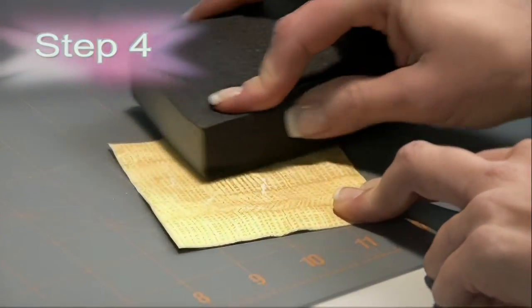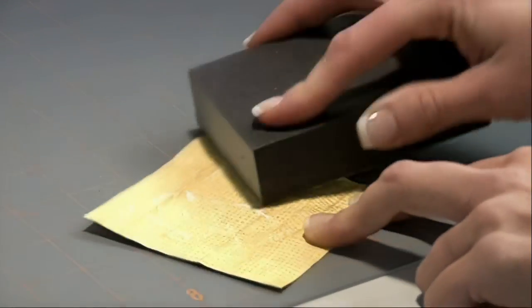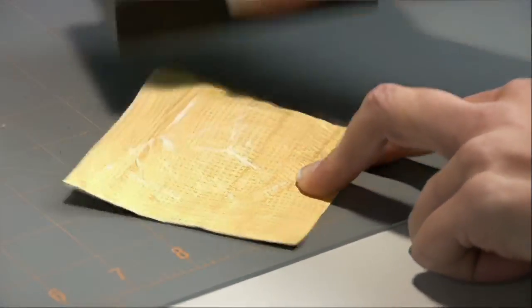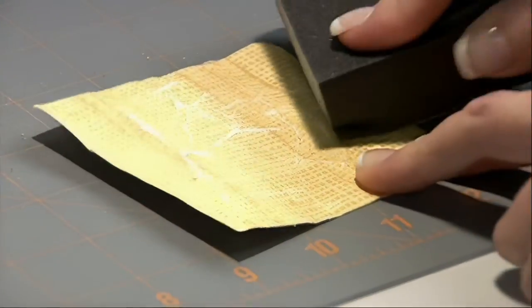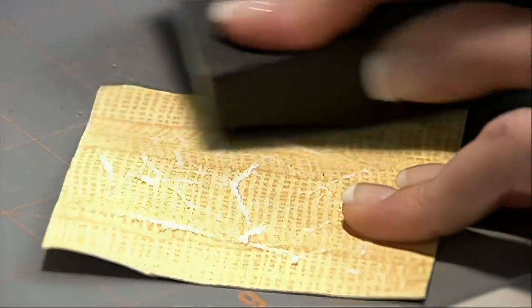Using a sanding block we are now going to take off the top layer of the yellow patterned paper. This is where you can see that we have the white core of the paper coming through as we sand our edges.